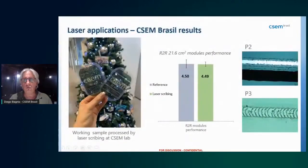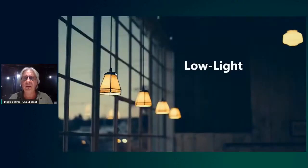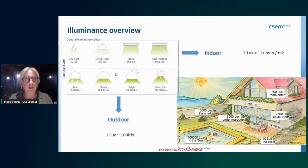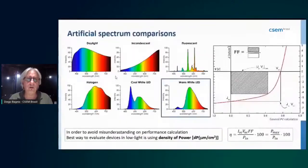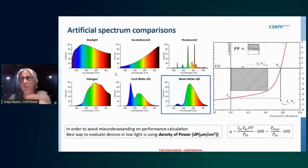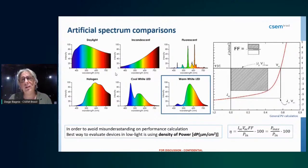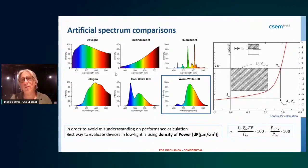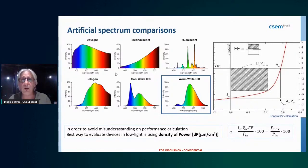For low-light applications, the light source is not the sun but artificial indoor light. The stack and some materials need to be modified to optimize performance at extremely low light intensities, in order to efficiently convert the small amount of light reaching the panel.